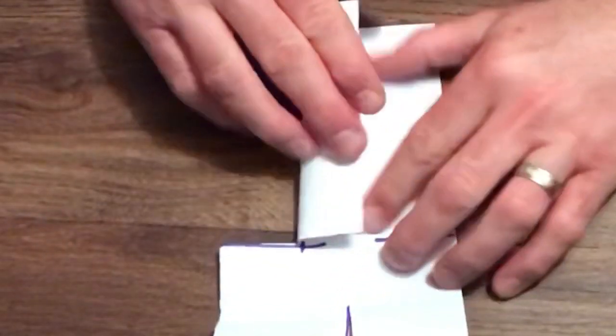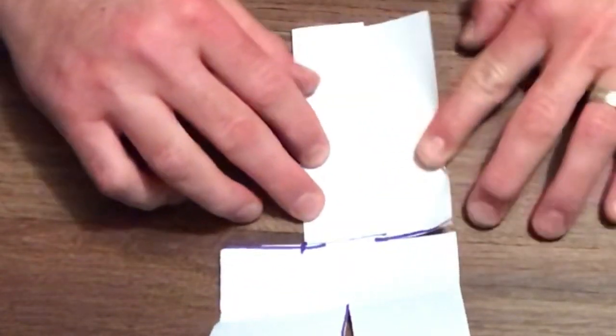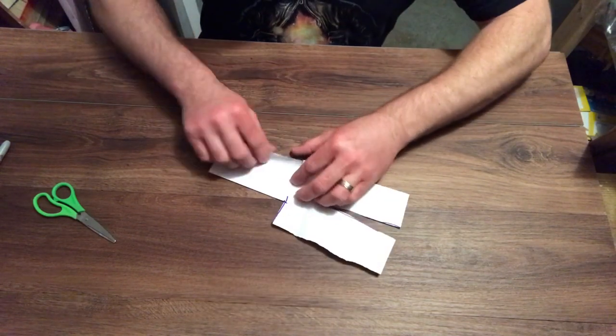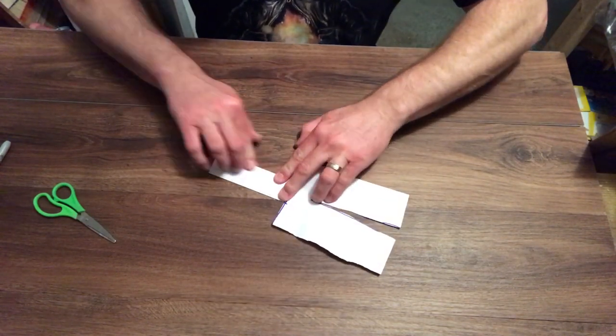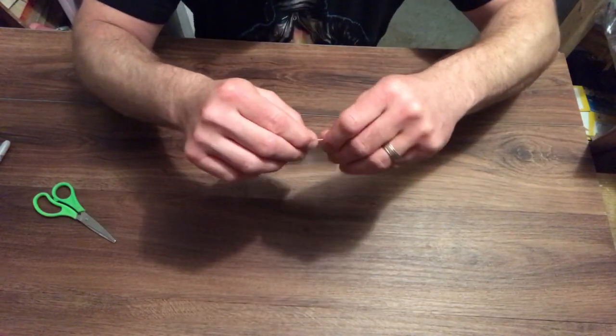And then this middle piece just folds over about a third of the way and the other one folds over a third of the way. You've got yourself a stem copter. So after creasing them down...